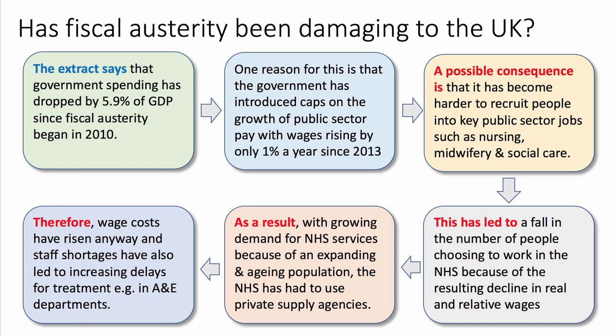This has led to — another connective phrase — a fall in the number of people choosing to work in the NHS because of the resulting decline in real and relative wages. As a result, with growing demand for NHS services because of an expanding and aging population, the NHS has had to use private supply agencies. Therefore — another connective phrase — wage costs have risen anyway, and staff shortages have also led to increasing delays for treatment, for example in A&E departments.